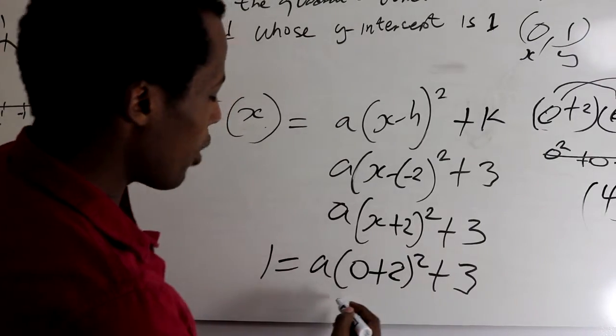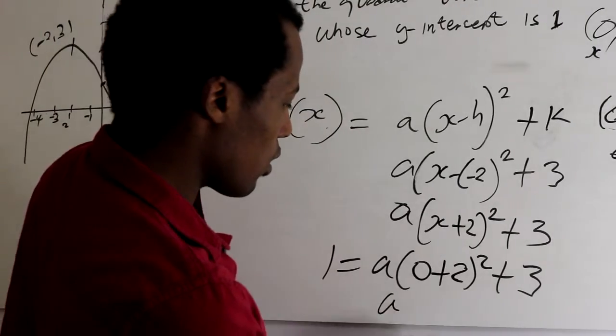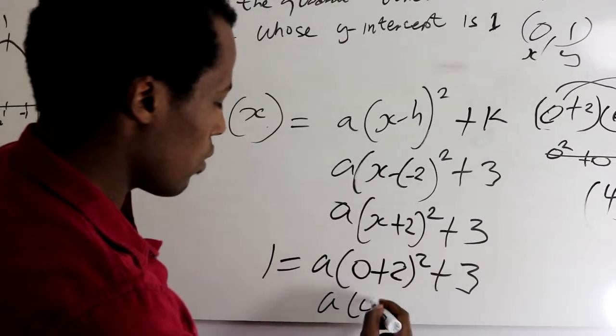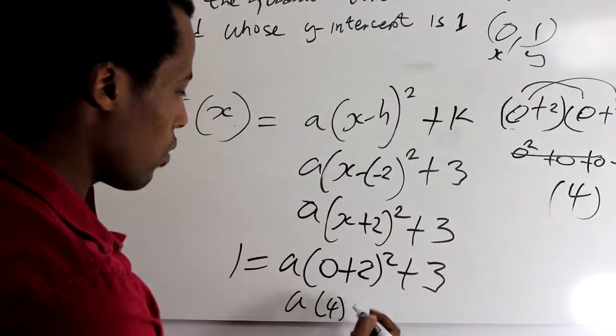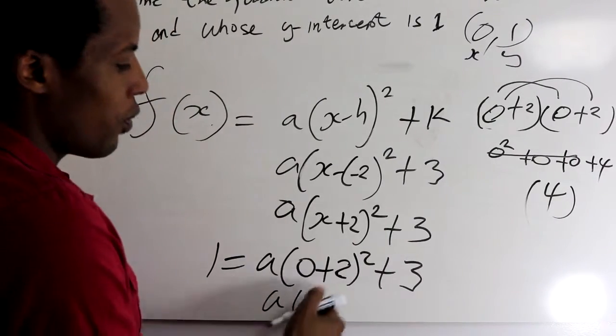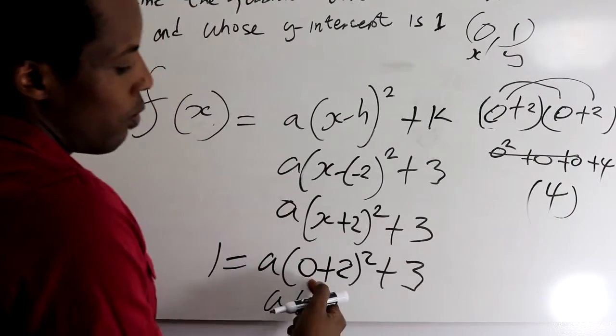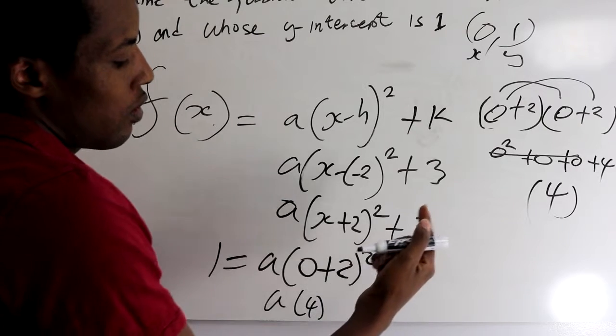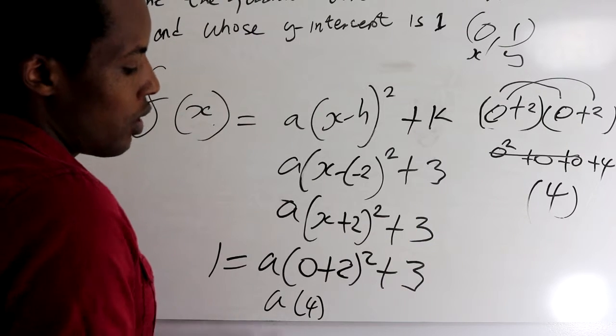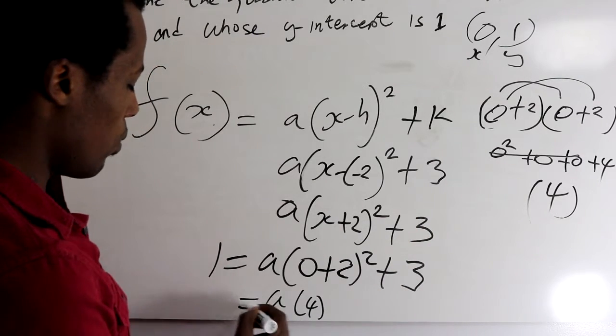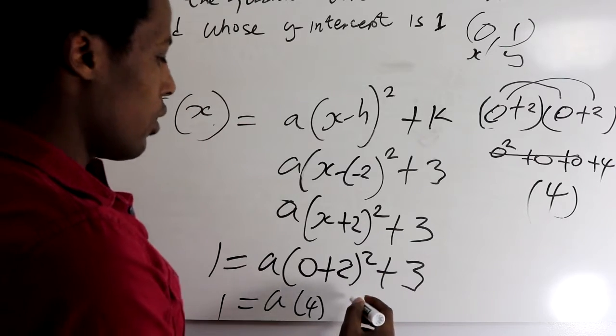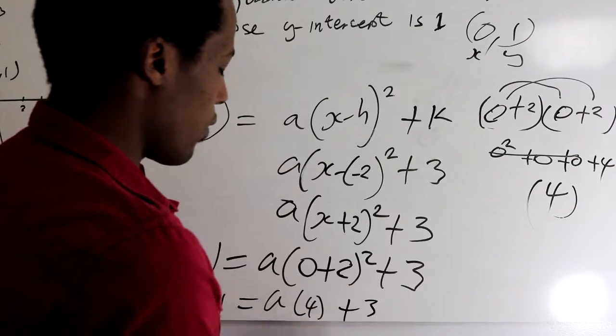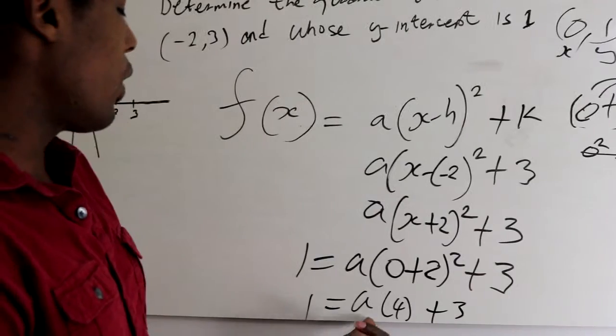So if you come back over here, A is equal to 4. A times 4 because you already get 4, and 0 plus 2 squared is equal to 4, is equal to 1, and then plus 3. So now we can find the value of A.